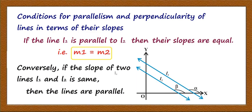Conversely, if the slopes of two lines l1 and l2 are the same, then the lines are parallel.